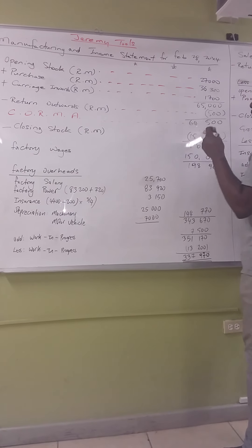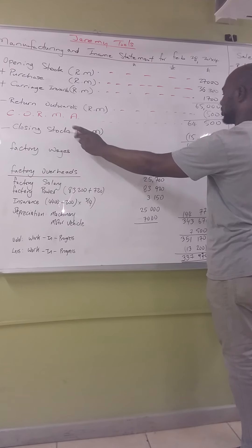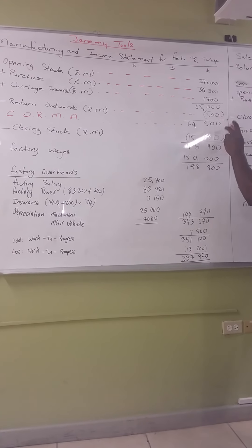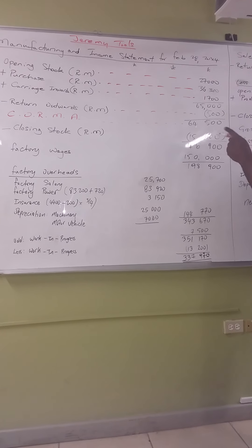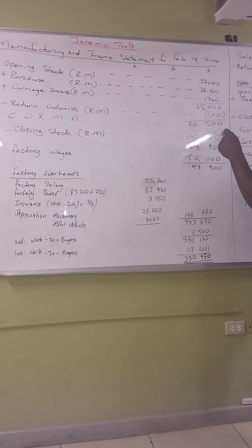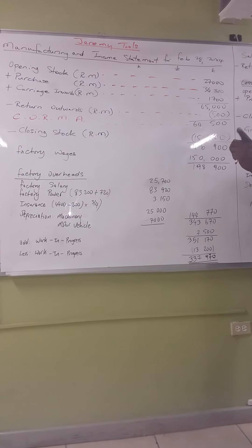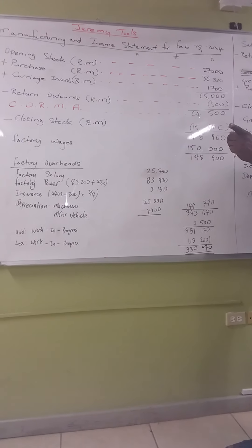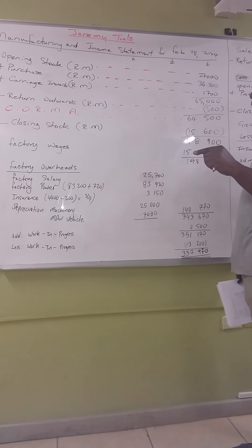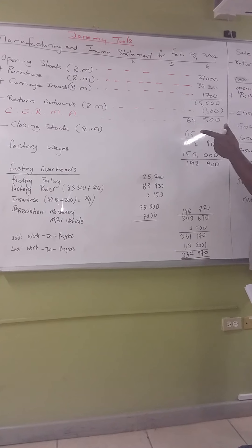Throughout the year you would have used materials, and at the end of the year your closing stock was 15,600. Quick correction: I realized the closing stock was not included in the question that was sent to your email, so I just sent an email speaking to that.